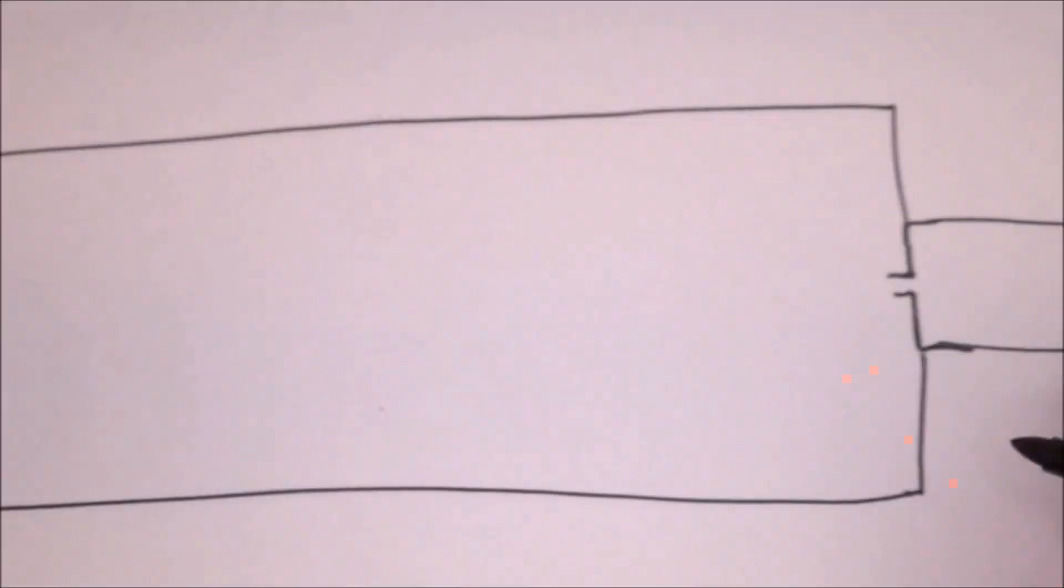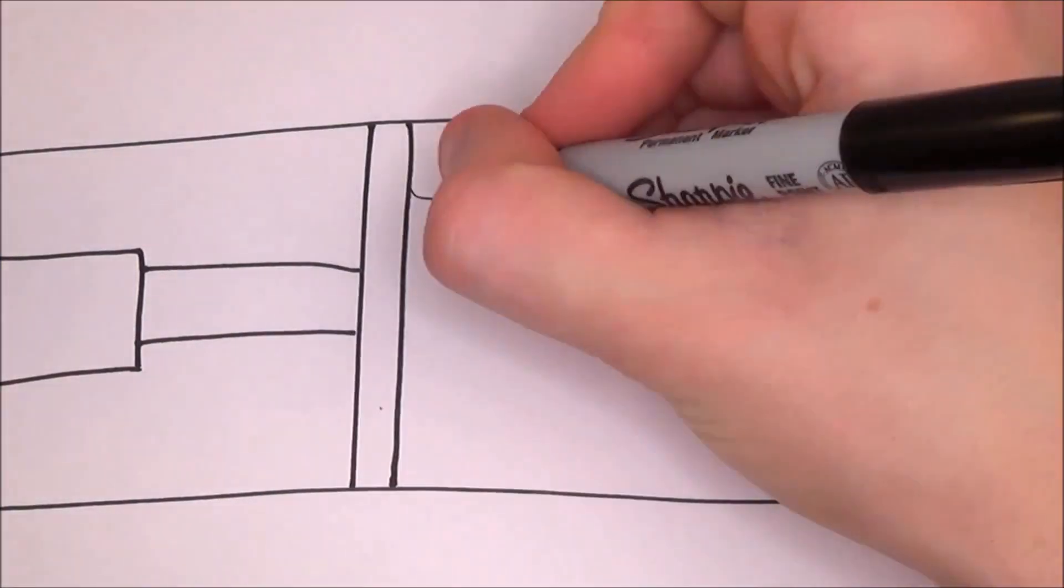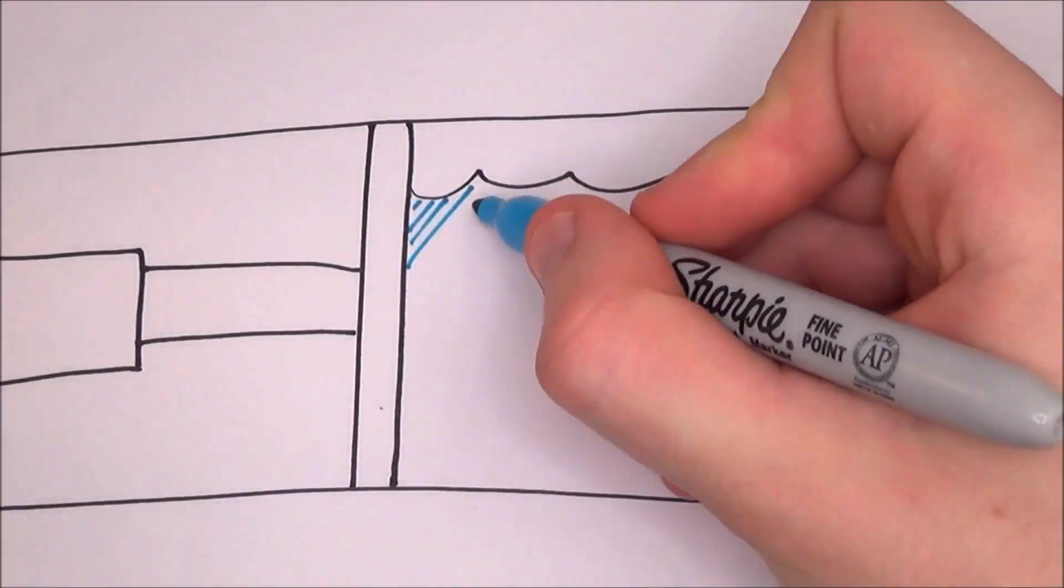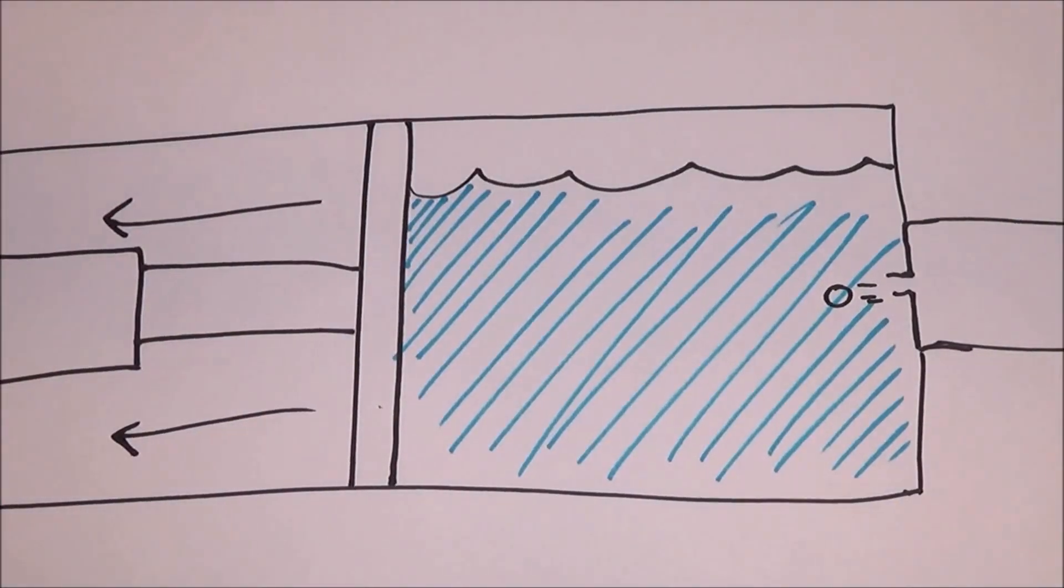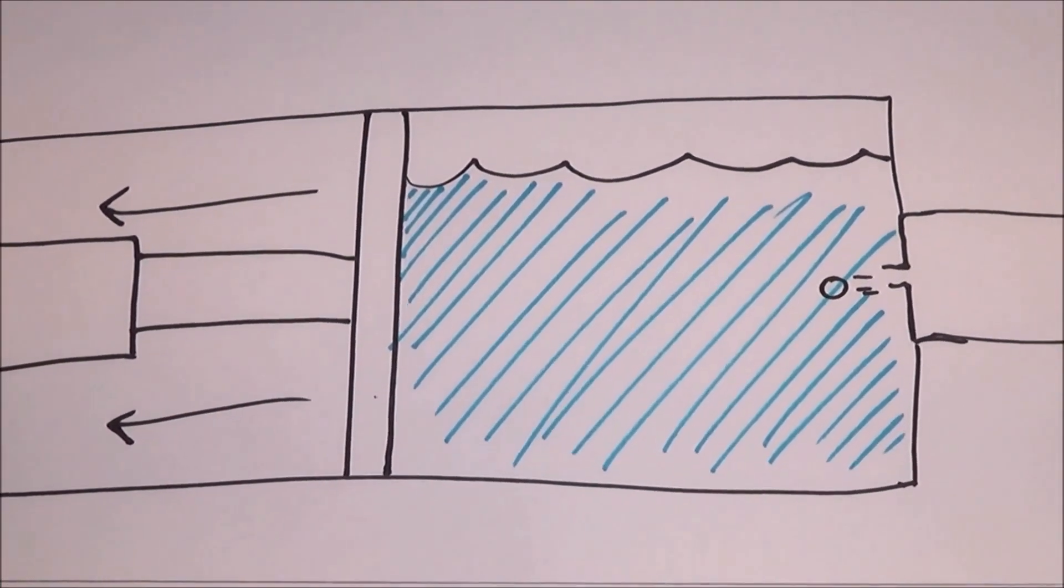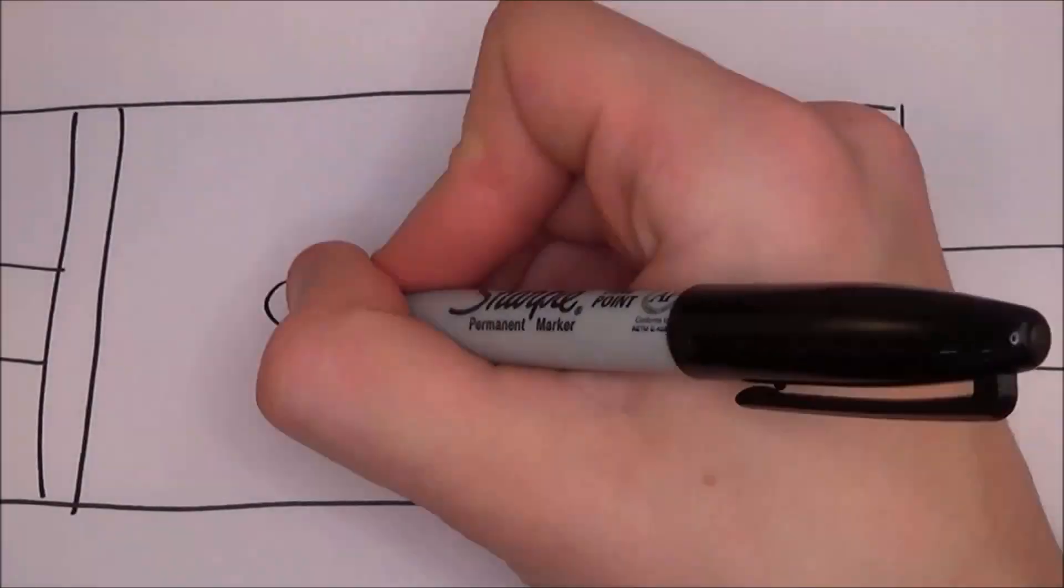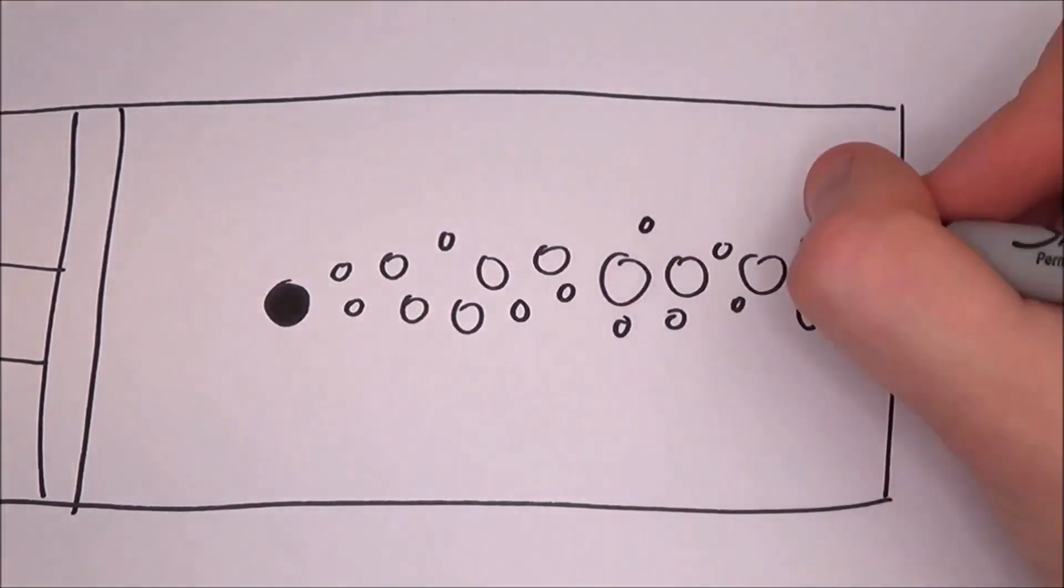Now a bubble chamber is similar to a cloud chamber. It can be made by filling a large cylinder with a liquid heated to just below its boiling point. Now as the particle enters the chamber, a piston will decrease the pressure in the chamber causing the liquid to become superheated. The ionized particles then form the ionized tracks to which the liquid is vaporized.